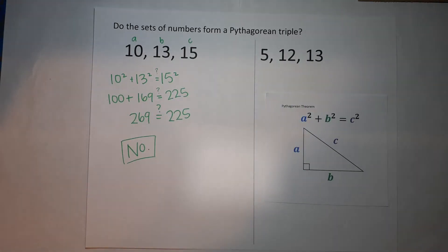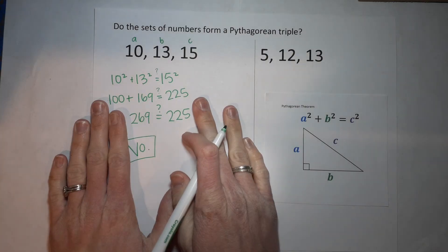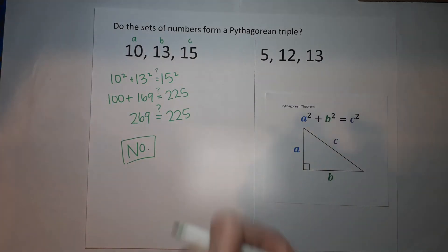That means this is not a Pythagorean triple. It did not work in the Pythagorean theorem, so it is not a Pythagorean triple.